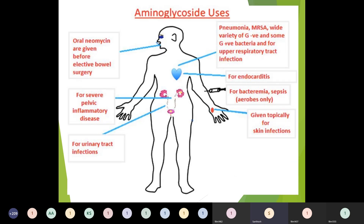The uses of aminoglycosides include: oral neomycin given before elective bowel surgery; severe pelvic inflammatory disease; urinary tract infections, which is the main indication; pneumonia; MRSA; a wide variety of gram-negative and some gram-positive bacterial infections; upper respiratory tract infections; endocarditis; bacteremia and sepsis; and orally for skin infections.